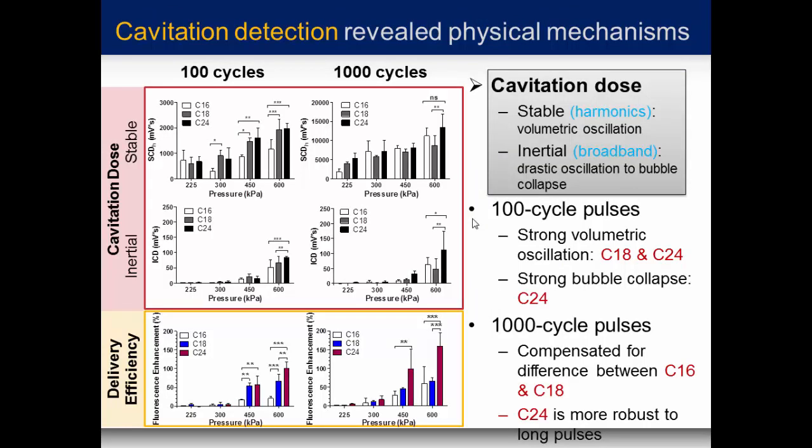For cavitation detection we looked at two phenomena associated with barrier opening. The safest is stable cavitation with volumetric oscillation of the bubble. With increased pressure you reach inertial broadband cavitation with drastic oscillation and potential bubble collapse. With 100 cycles we see a change at higher pressures between smaller and longer chain lengths. With 1000 cycles there's only a change at 600 kilopascals between C18 and C24 for stable cavitation. For inertial cavitation, more change occurs at 600 kilopascals for both 100 and 1000 cycles. Delivery efficiency nicely follows what we see with stable cavitation, with shell effects most pronounced at higher pressures.